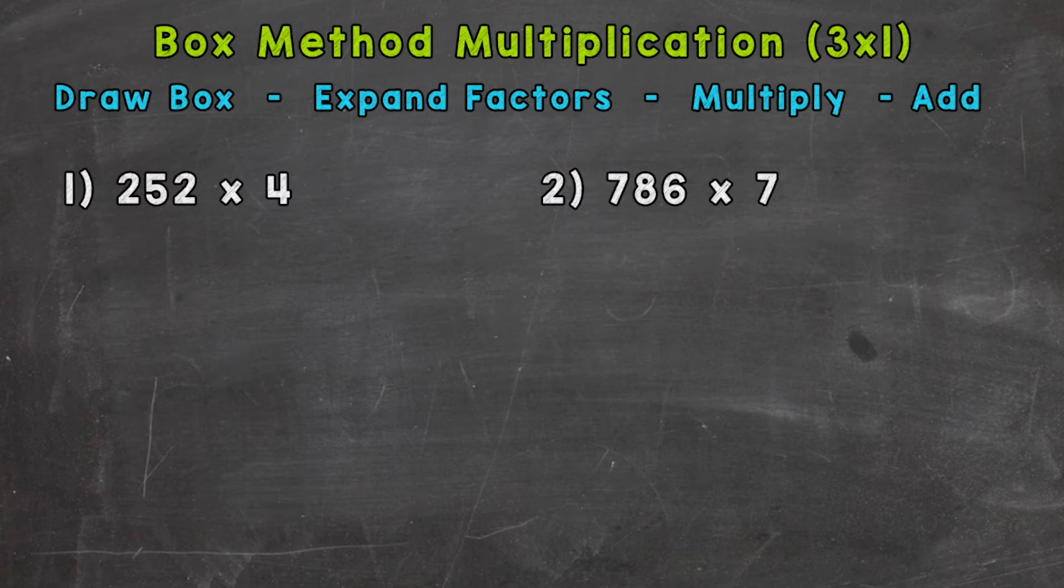In this video, I'm specifically going to be covering multiplying three-digit numbers by one-digit numbers. So let's jump into number one, where we have 252 times 4. So at the top of the screen there, I have the steps that we're going to use here in order to solve these with the box method. And the first step is drawing the box.